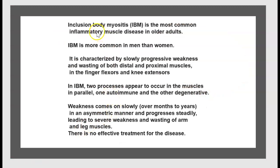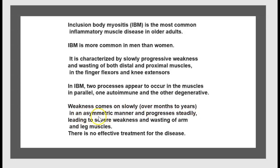In review: Inclusion Body Myositis is the most common inflammatory muscle disease in older adults. IBM is more common in men than women. It is characterized by slowly progressive weakness and wasting of both distal and proximal muscles in the finger flexors and knee extensors. Two processes occur in IBM — autoimmune and degenerative — with weakness coming on slowly over months to years in an asymmetric manner, progressively leading to severe weakness and wasting of arm and leg muscles. There is no effective treatment for the disease.